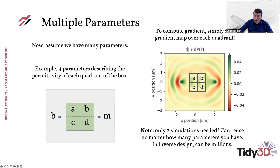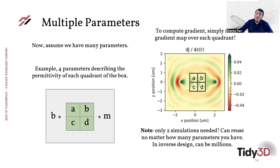One of the most important innovations of the adjoint variable method is that when you have a large number of parameters, you still only need two full simulations — one forward and one adjoint. To account for multiple parameters, you just form the overlap integral between the forward and adjoint fields in the regions corresponding to those parameters. As a result, independent of the number of parameters, only two full simulations are needed. In inverse design, the number of parameters may go up to even millions, making it essential to use the adjoint variable method to compute the gradient in this million-dimensional space.